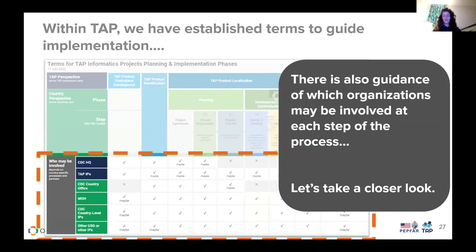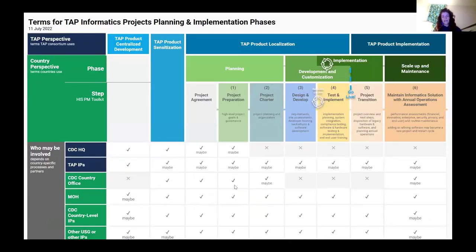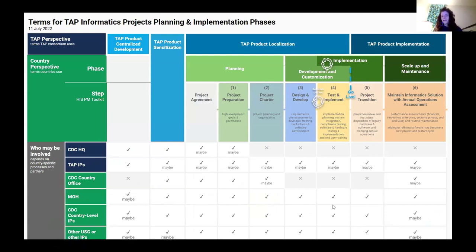There's also guidance on which organizations would be involved. Recognizing that if you have different stakeholders involved in your electronic health record planning and implementation, different folks are going to be needed at different times. This is a high-level overview — maybe CDC headquarters is involved at the project agreement, but more likely it's the ministry and country offices. So at a high level, it can show you who's involved when, and at which stages of the implementation.